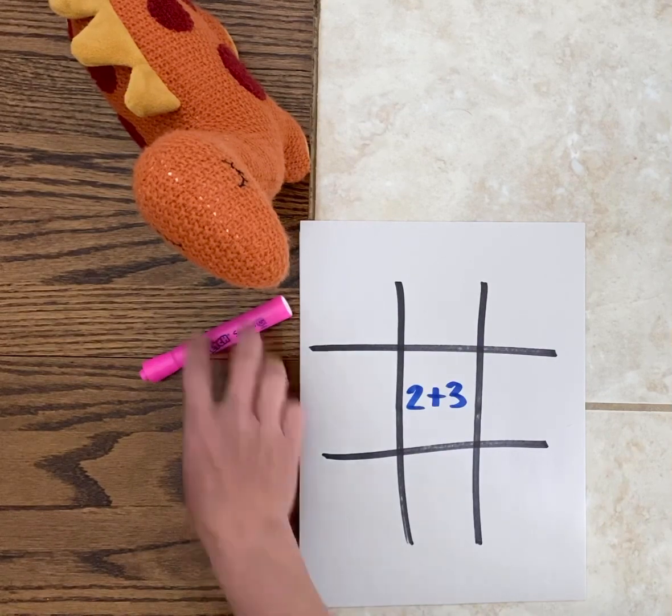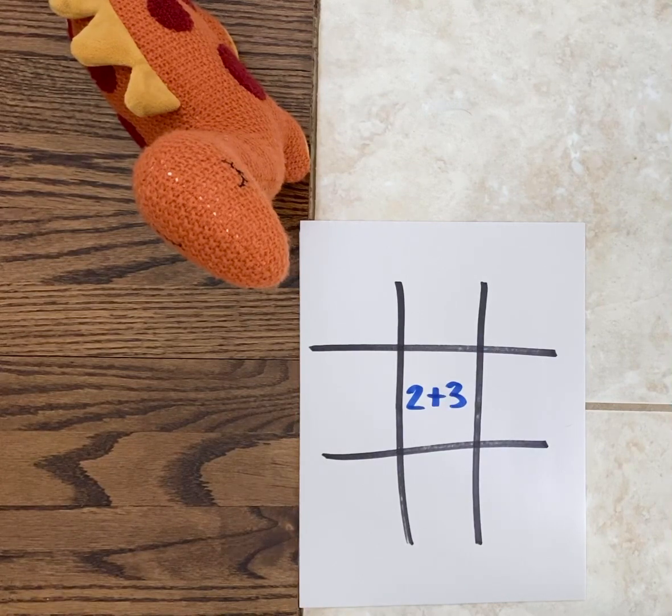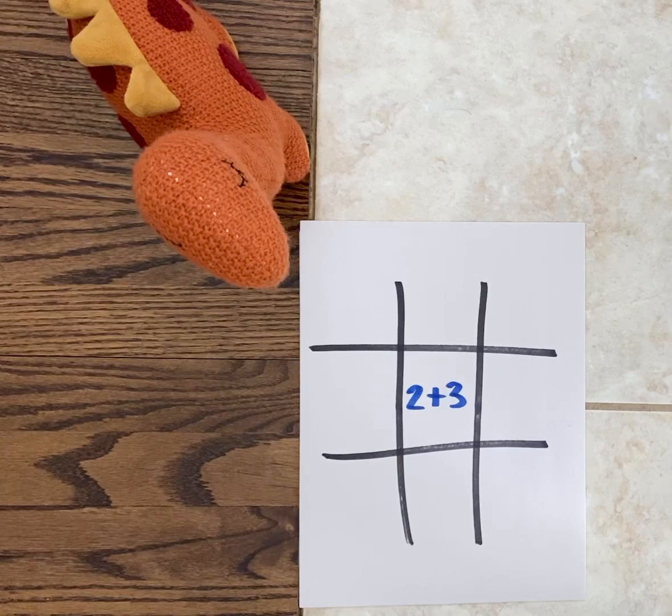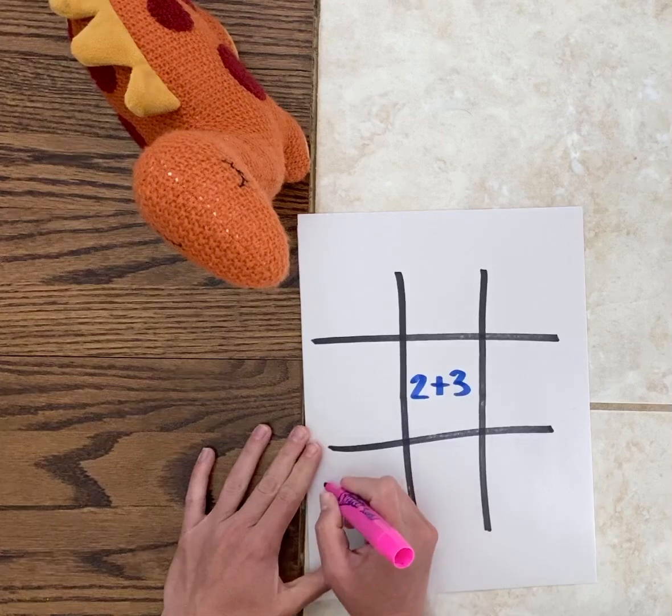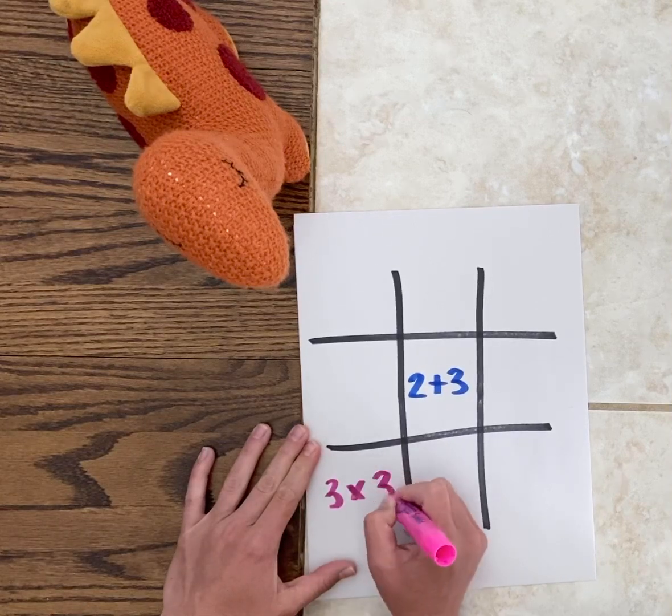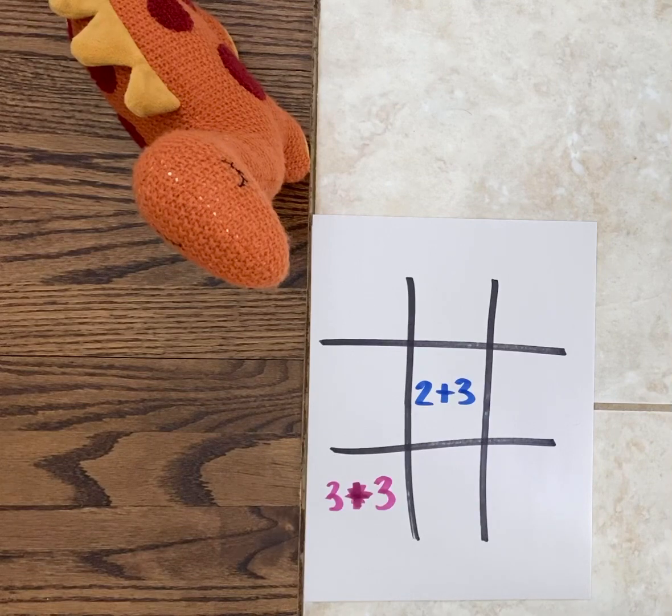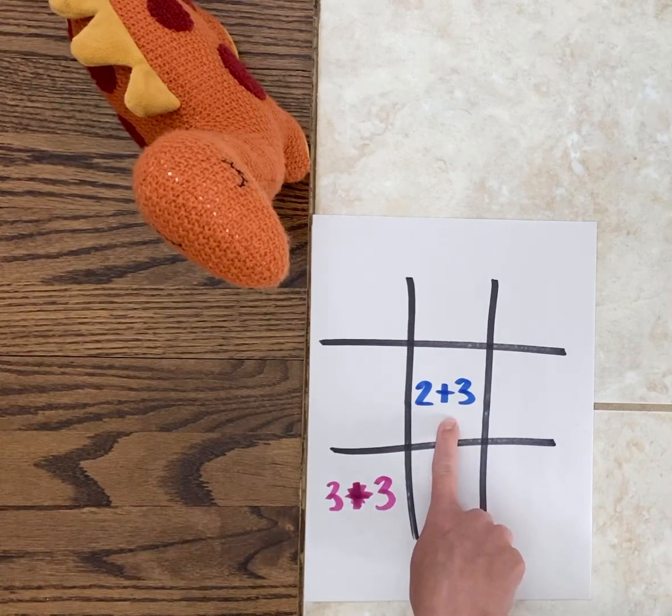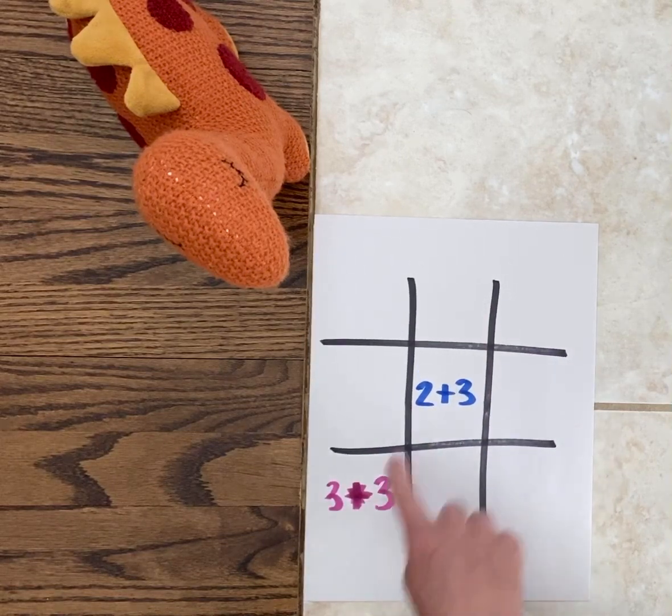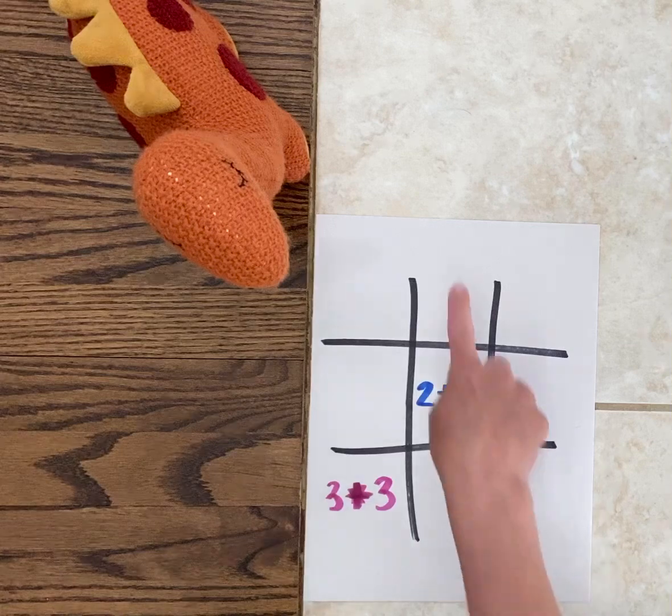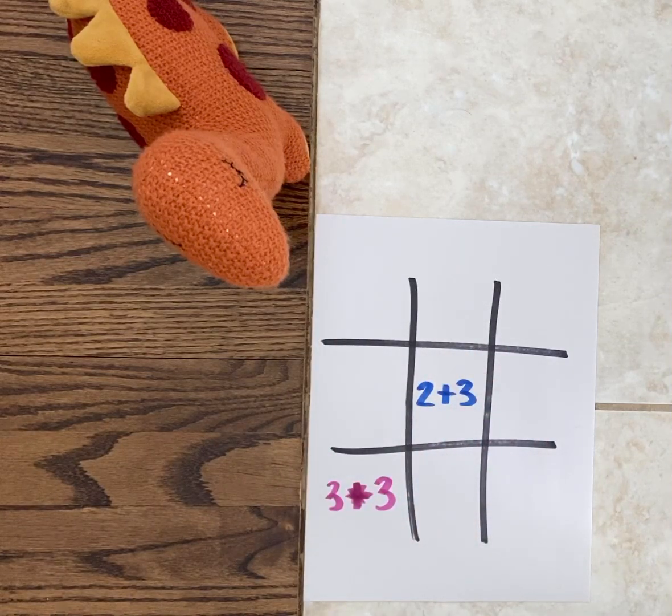Now dinosaur is probably going to want to pick something else so that we can keep our answers sorted. So dinosaur might choose six. Let's say the dinosaur is going to go in the bottom here and do three plus three which is six. Okay, now it's my turn. So I have an answer that makes five here. I'm not going to go here because dinosaur already has six here so that probably wouldn't make sense. I could try diagonal, I could try up and down, I could try across.